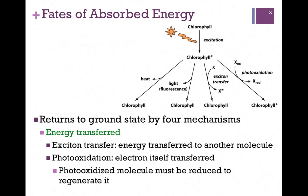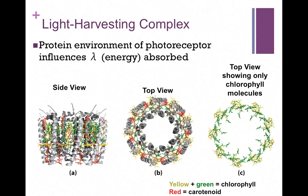Let's look a little more at exciton transfer, which relates to the process of harvesting light. We do so by means of photo-receptors or pigment molecules. These pigment molecules are highly conjugated so they absorb light in the visible range, and the nature of the molecule determines the wavelength of light absorbed. On the far left is the protein complex — the light harvesting complex — where the protein is shown in gray and the photo-receptors are colored. It contains a number of different photo-receptors: the yellow and green are different chlorophyll molecules and the red are carotenoids. The top-down view shows a very symmetrical molecule with many photo-receptors, all embedded in protein, which alters somewhat the wavelength they're able to absorb.